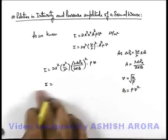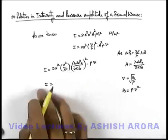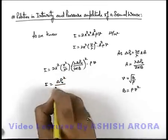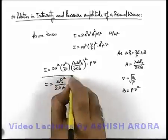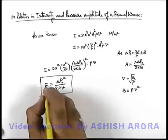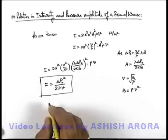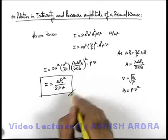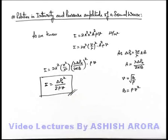If we eliminate these terms and re-analyze all the factors, we get the final relation as ΔP₀²/(2ρv). This is quite an important relation for the majority of numericals related to pressure amplitude and wave intensity. So this is an important relation you should keep at your fingertips.